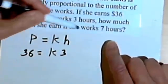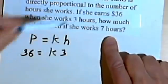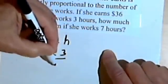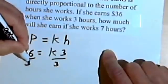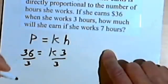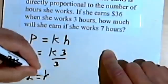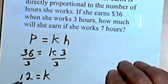Then they want to know how much she's going to earn when she works 7 hours. So the first thing I have to do is find the k. So once again, I'll just divide by 3. 36 divided by 3 is 12. So k, the constant of variation, is going to be 12.